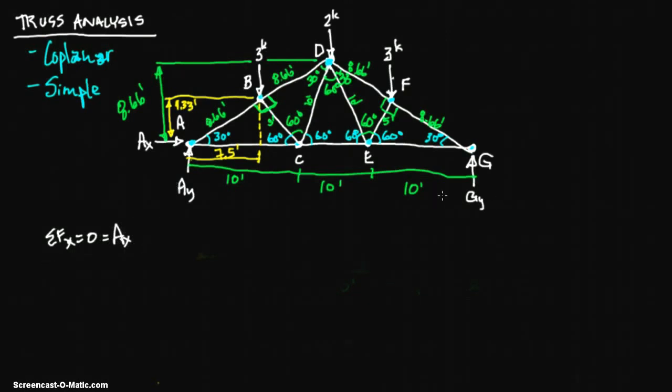We have two unknown y reactions, so we can't solve for the sum of the forces in the y direction. We have to do the sum of the moments. Sum of the moments about point A equals 0. Let's go from left to right. We're isolating GY. This is a G, I don't know what that looks like, but GY.